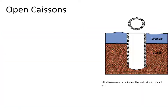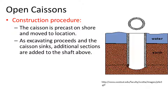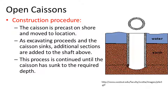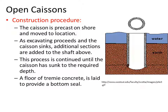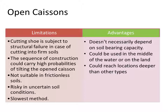Open caissons, as the name suggests, are open from the top and bottom, and penetrate the soil using a cutting shoe. The caisson is precast on shore or moved to location — it can be used on shore or on land. As excavation proceeds and the caisson sinks, additional sections are added to the shaft above. This process continues until the caisson has sunk to the required depth, then a floor of tremie concrete is laid to provide a bottom seal, and the dredging wells are filled with concrete to complete the structure.